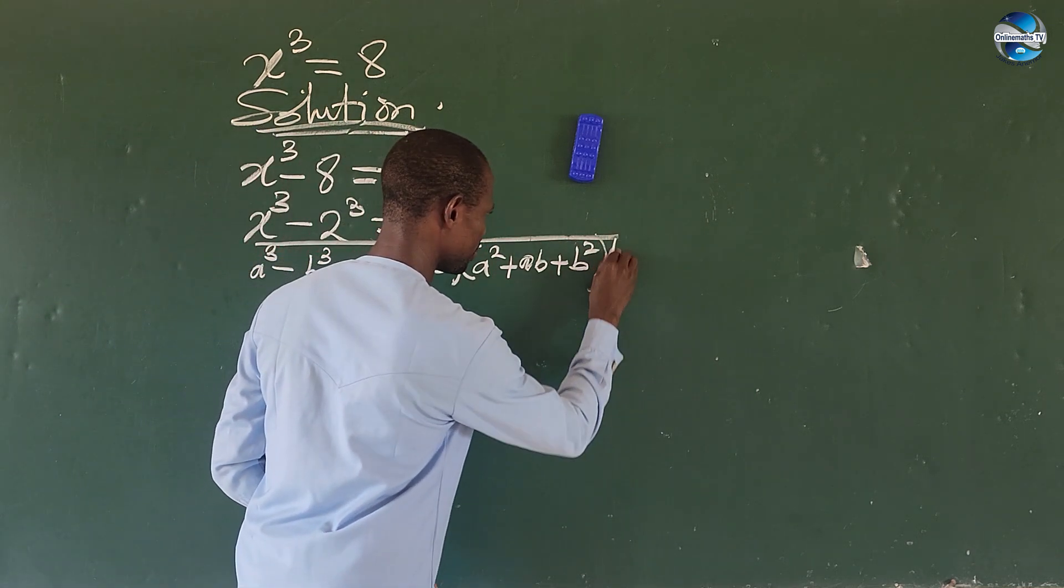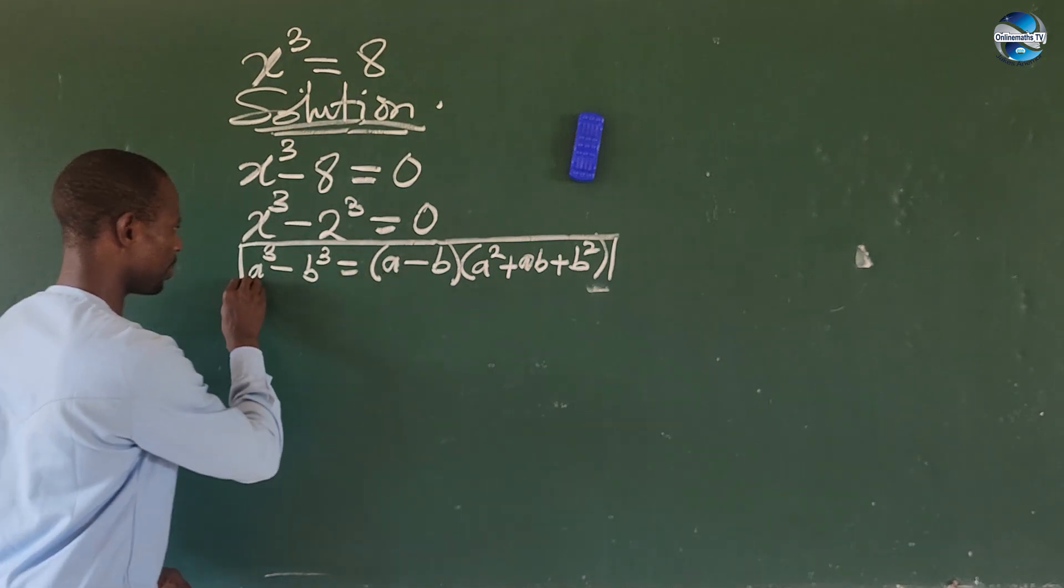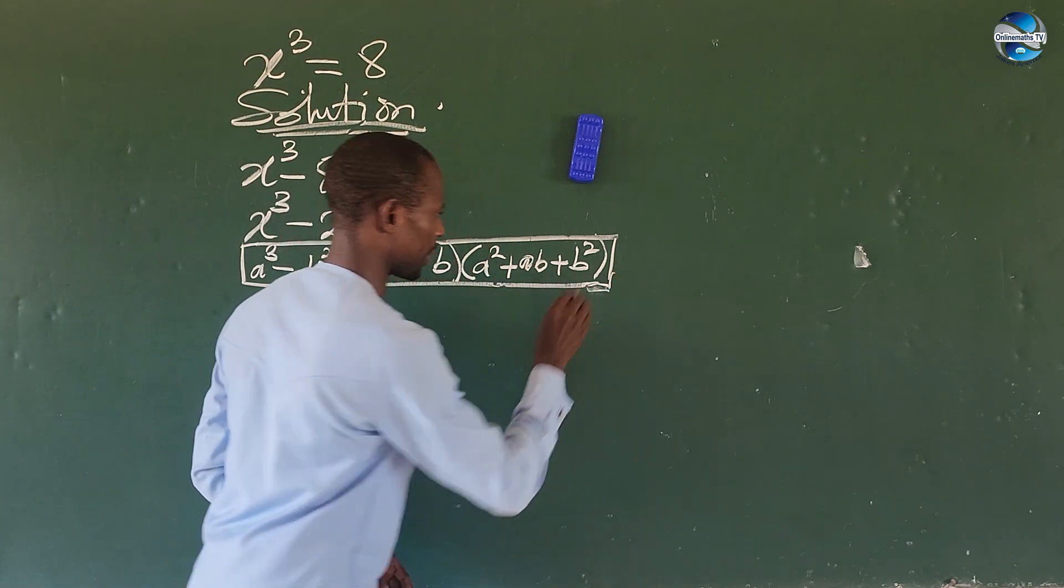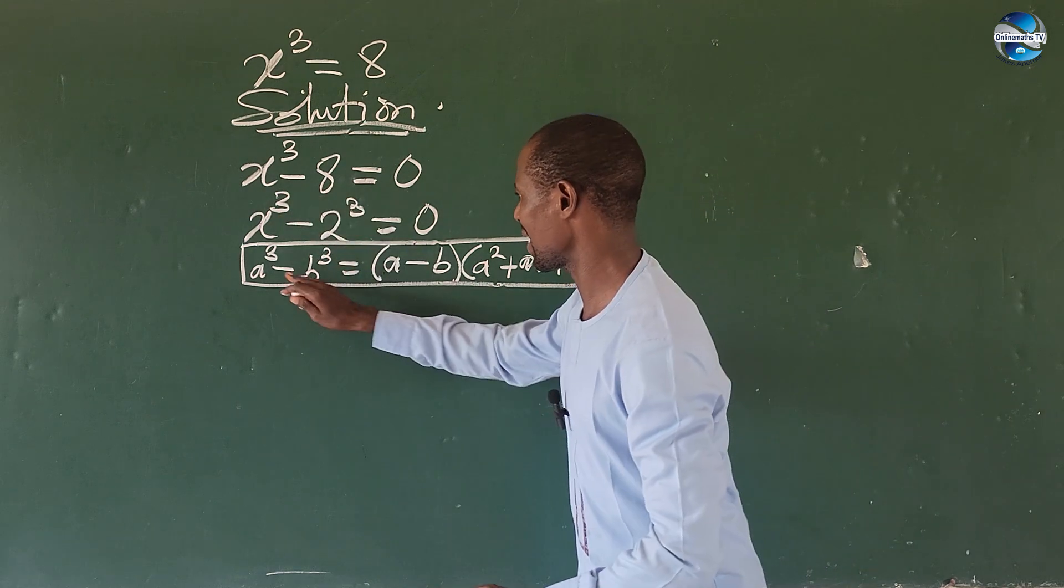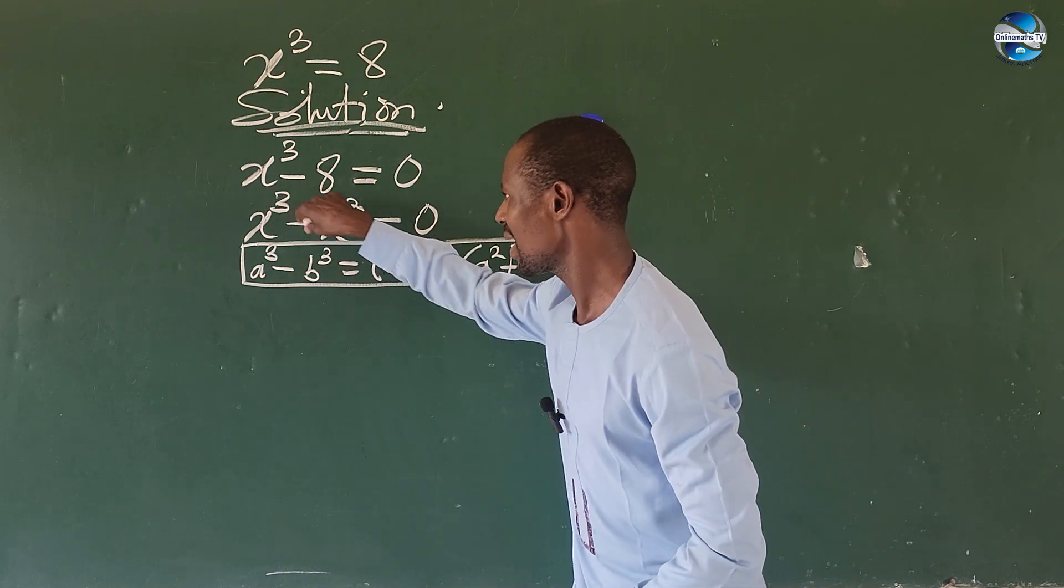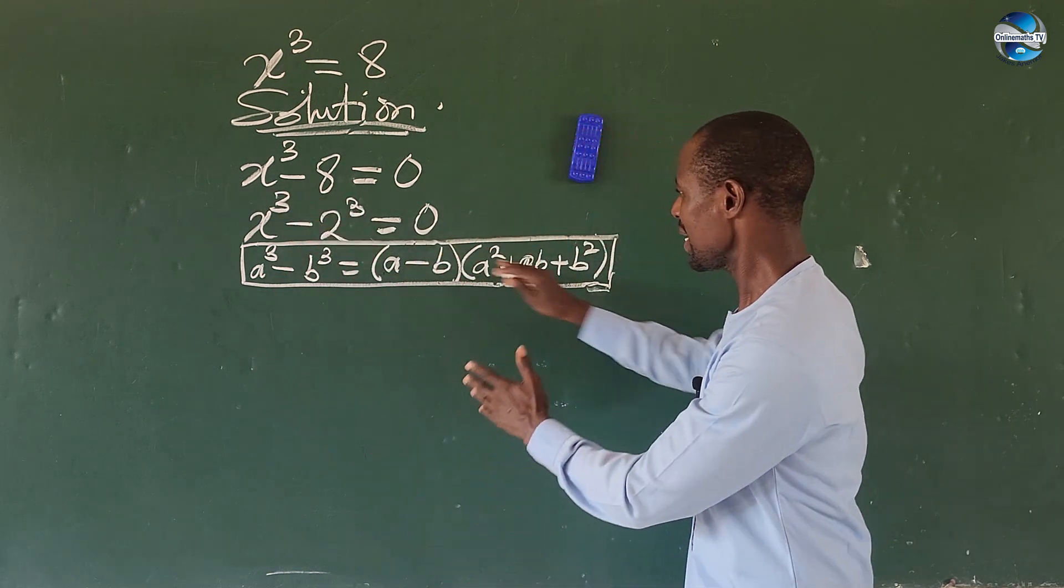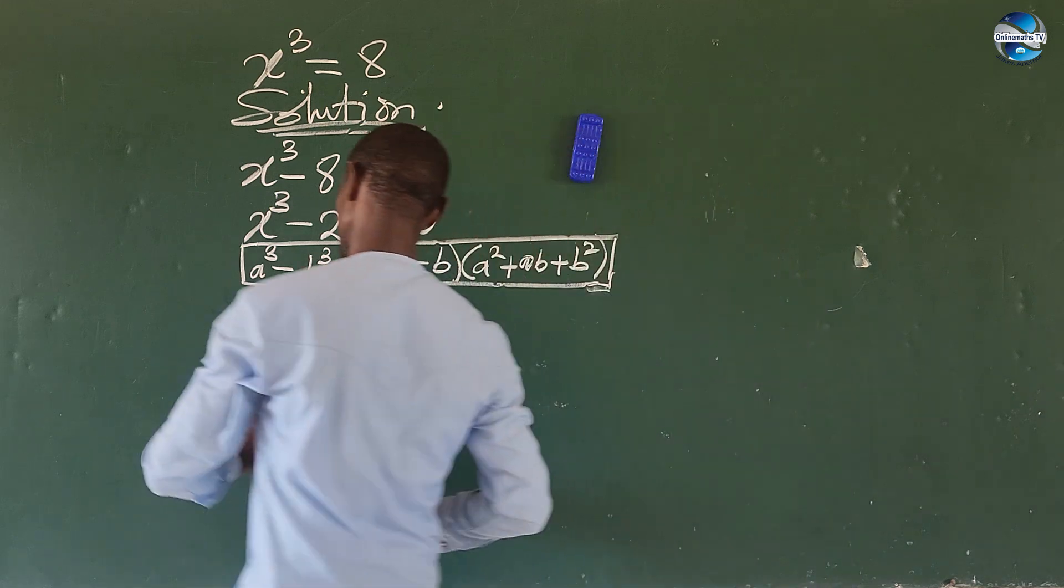So let's rule this guy out here. This is the difference of two cubes. So what we have here now is similar to this. So we can rewrite the left-hand side of this equation in this format.